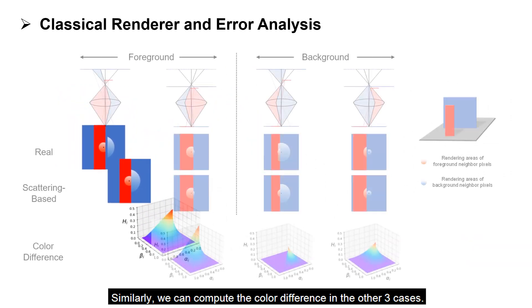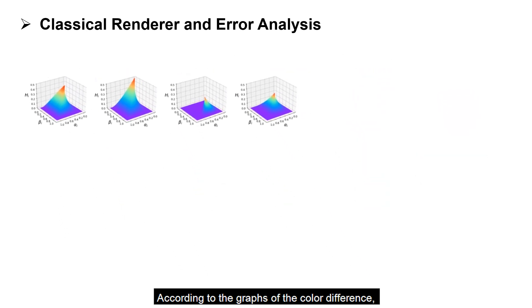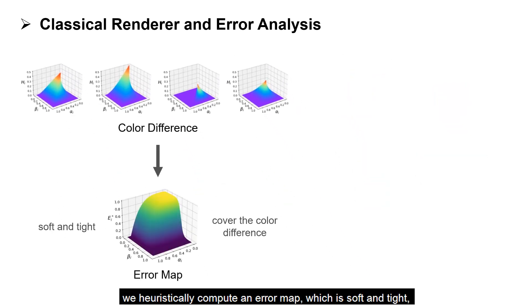Similarly, we can compute the color difference in the other three cases. According to the graphs of the color difference, we heuristically compute an error map, which is soft and tight, and basically covers the color difference in all cases.